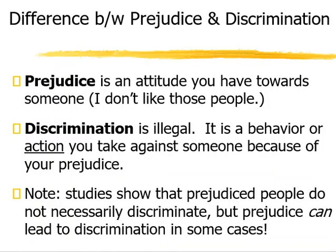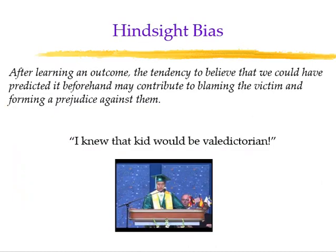Discrimination is illegal — we have laws in the United States that prohibit discrimination. That doesn't mean people don't have prejudice; people still do, and discrimination still occurs despite protections. Hindsight bias — 'I knew it all along' after learning the outcome — can lead to blaming the victim and forming prejudice. Looking at the outcome of a situation and stereotyping it, saying 'I knew that was going to happen because of this stereotype,' is an example of hindsight bias that can also reflect prejudice.